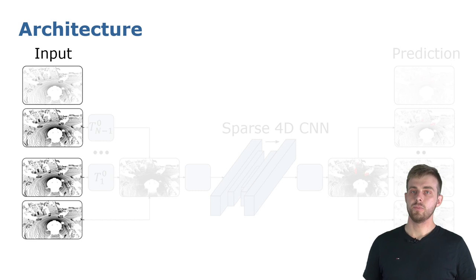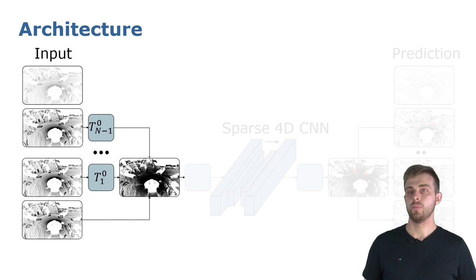Let us have a more detailed look into the architecture. On the left, you see the stream of perceived point clouds with the most recent scan at the bottom. The input scans are transformed into a common coordinate frame using previously estimated poses and are aggregated to a 4D point cloud.